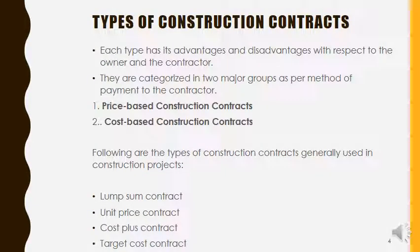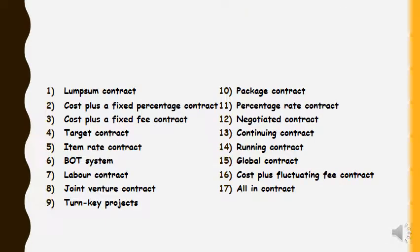Types of construction contract are mainly divided into price-based construction contract and cost-based construction contract. Price-based is based upon the price involved for each individual activity; cost-based means the total cost involved in the project. The commonly used types are: lump sum contract, unit price contract, cost plus contract, and target cost contract. Other types include BOT (Build Operate and Transfer), labor contract, joint venture contract, turnkey project, package contract, percentage rate contract, negotiated contract, running contract, global contract, and more.